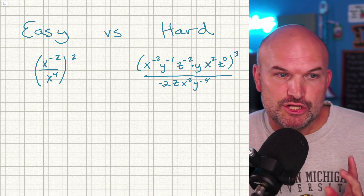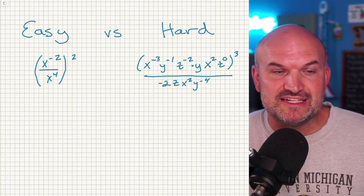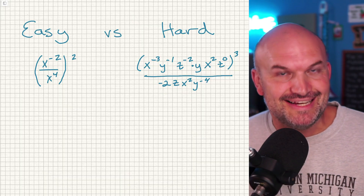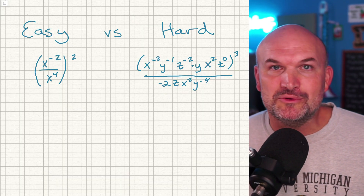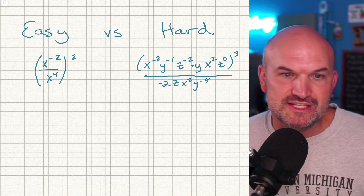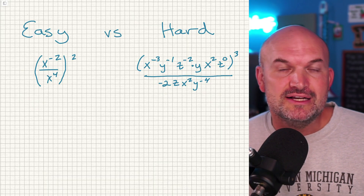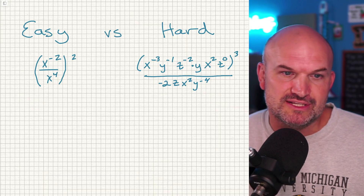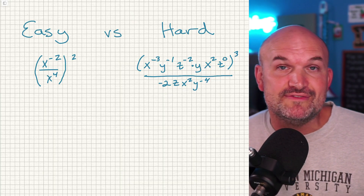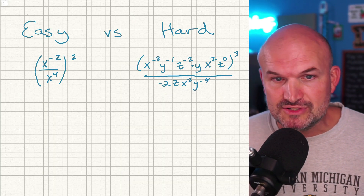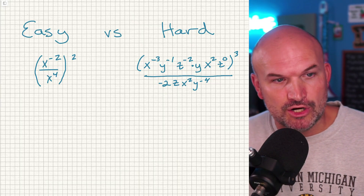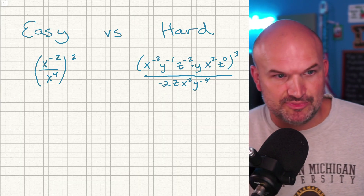Let's take a look at simplifying an expression using the rules of exponents, with an easy versus a hard example. There are many examples I could have chosen, but I chose these two to cover some basic rules of exponents. As I work through these step by step, I'll explain which rules of exponents I'm using so you can understand and apply them on your own. Let's start with the first example.